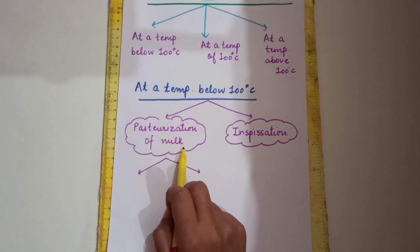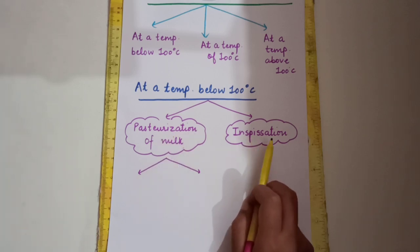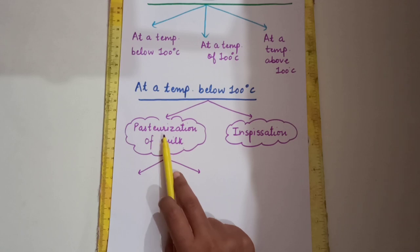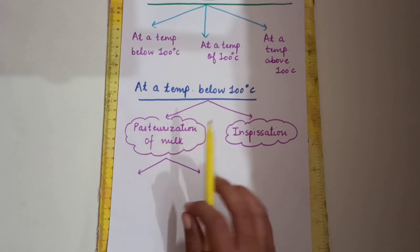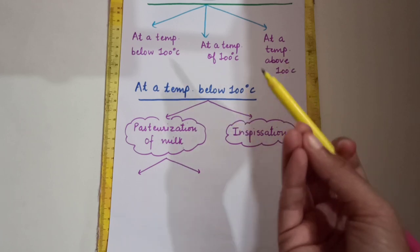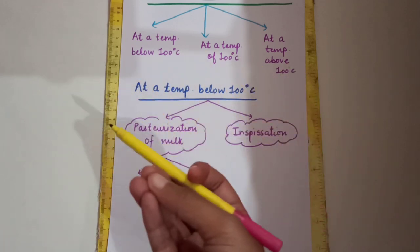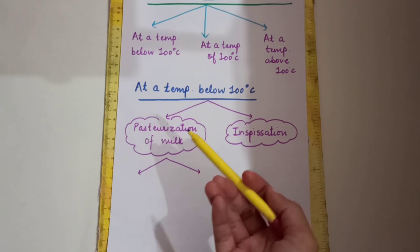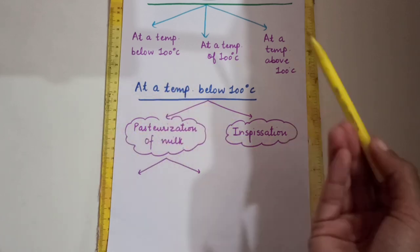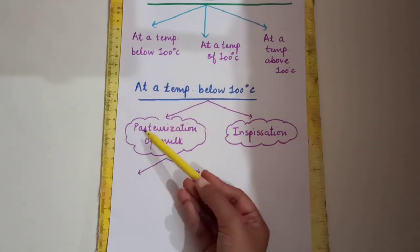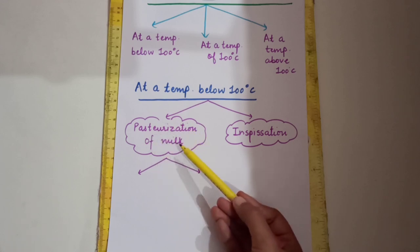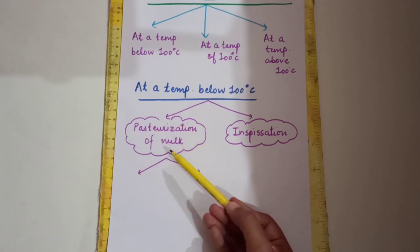The first method below 100°C is pasteurization of milk, and the next one is inspissation. Pasteurization, as a basic term, means partial sterilization of any product — whether wine or milk. So pasteurization of milk means partial sterilization of milk.